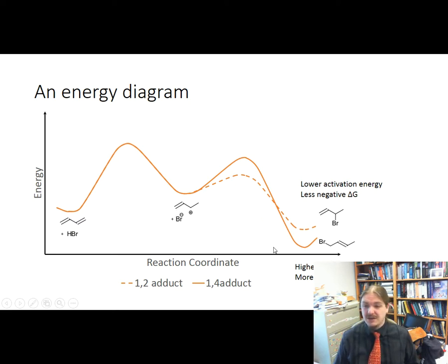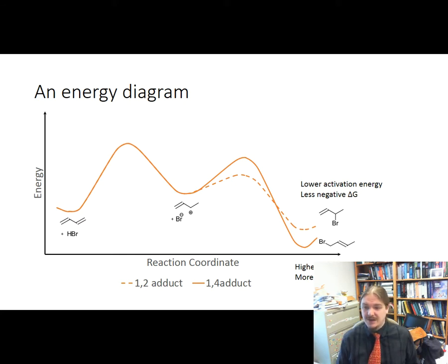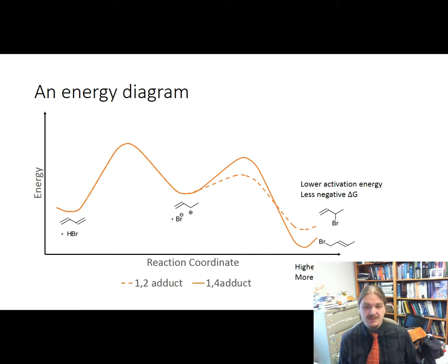You can see in the energy diagram that there are some differences. The 1,2-adduct has a lower activation energy, but its overall energy change for the reaction is smaller and less negative. The 1,4-adduct has a higher activation energy, but a more negative energy change per reaction. This difference in activation energy and energy change is what allows temperature to control the outcome of this reaction.